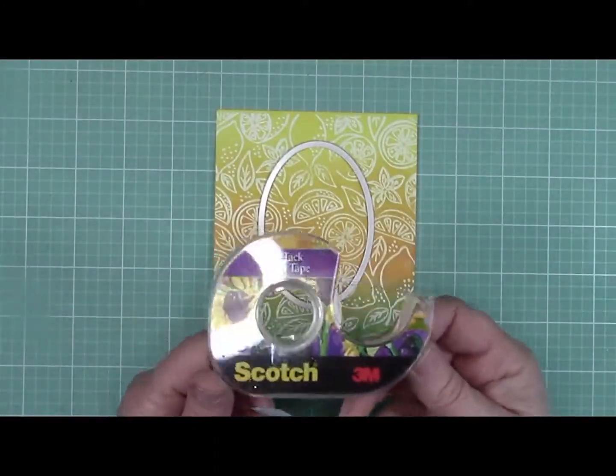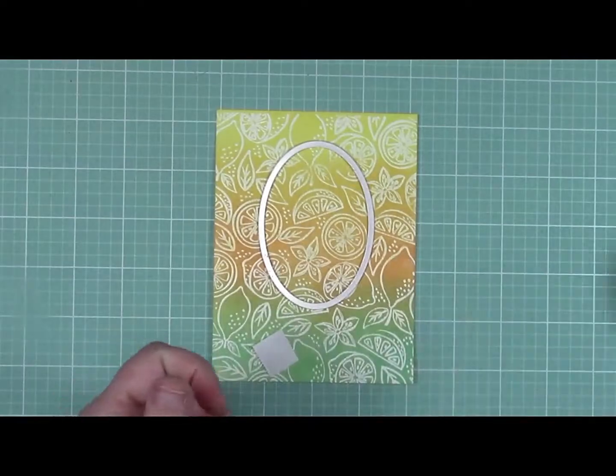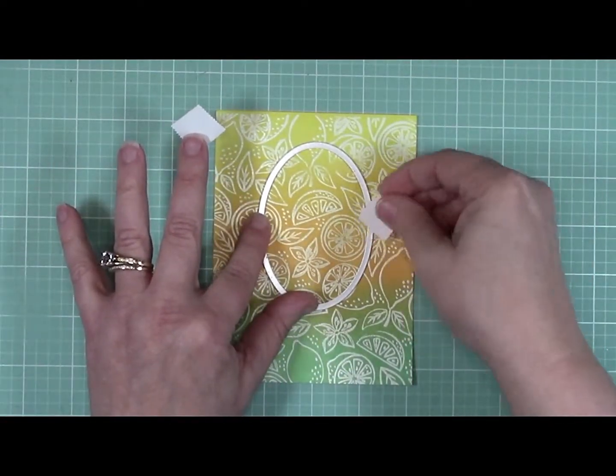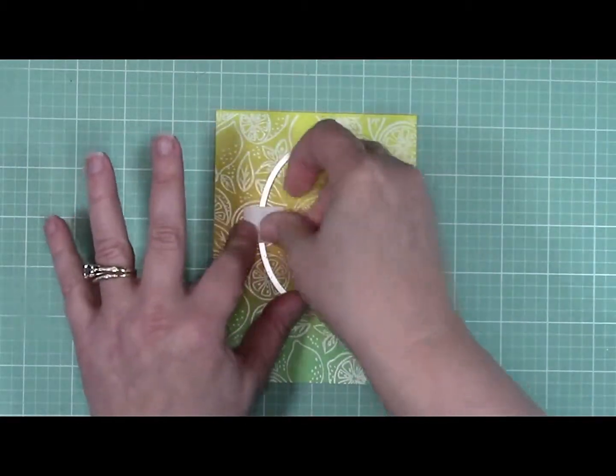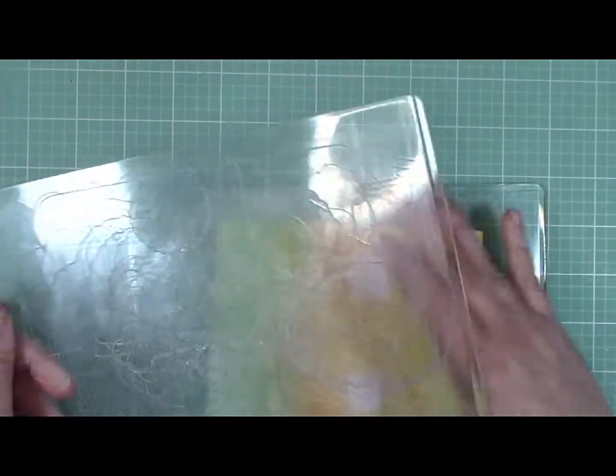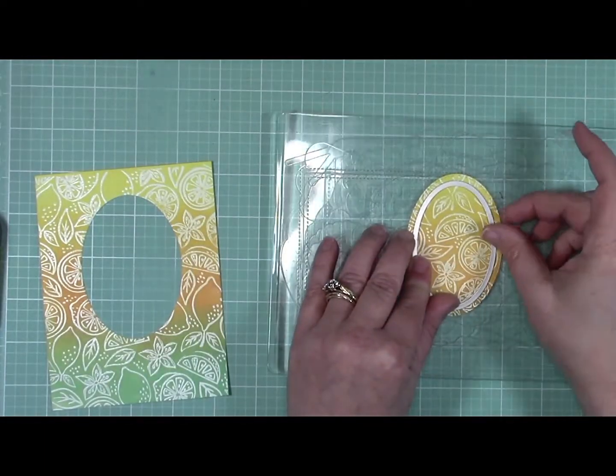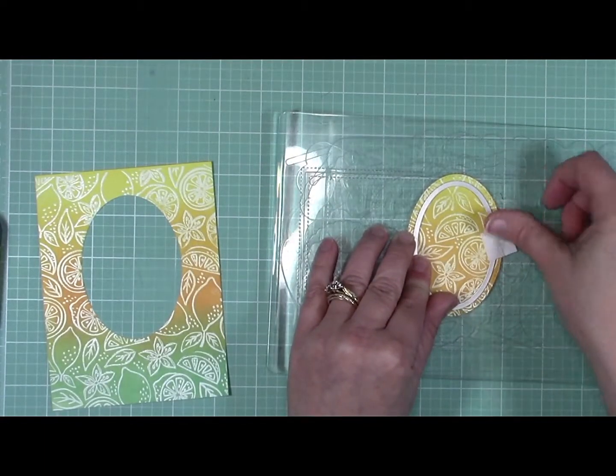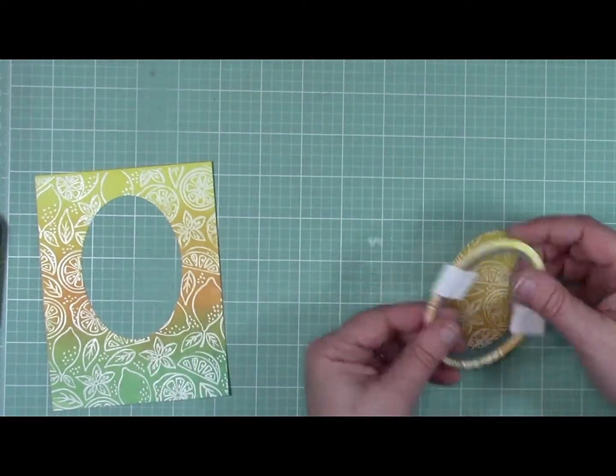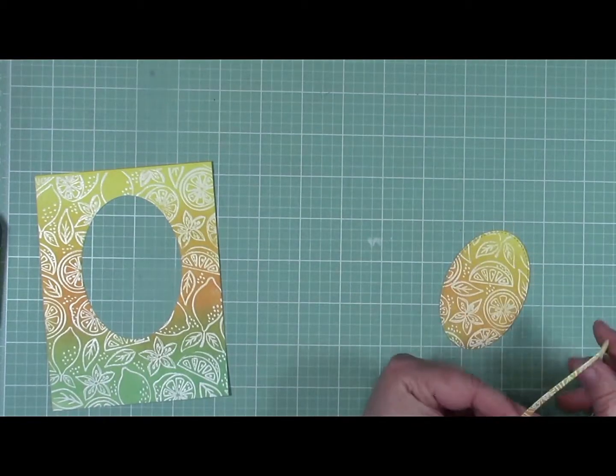Now I'm going to use some low tack artist tape from Scotch, and I'm going to use that to secure my window onto the front panel that I did a minute ago, working in—it's the fourth die in this set. Then I'll repeat the process with the fifth die in this set to cut it slightly smaller. Once placed in my card, that little bit of area is going to appear as a frame, and it's actually going to be the color of my card base peeking through.